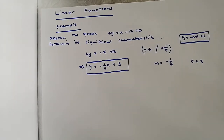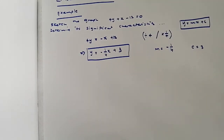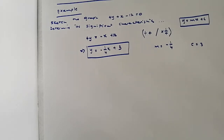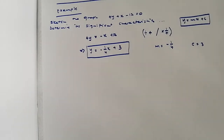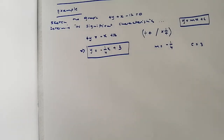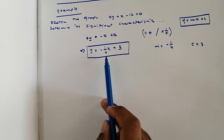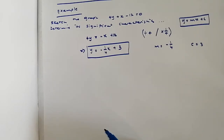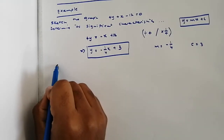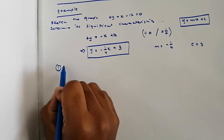I chose this example intentionally, because some people might think I'm just repeating the same thing from the previous video. But I chose this specific example so that we can appreciate a graph even when the slope is negative, and so we're able to identify both the gradient and the y-intercept.